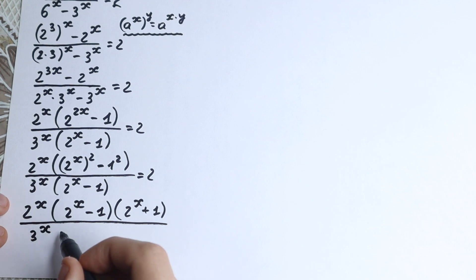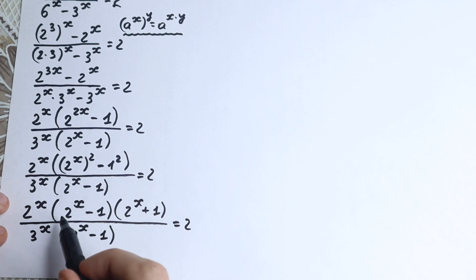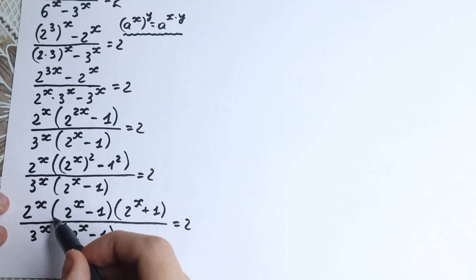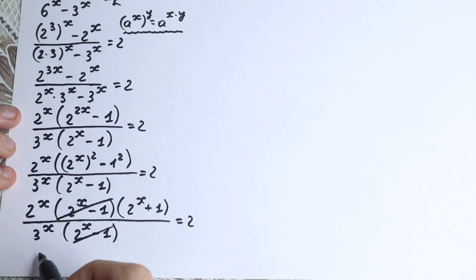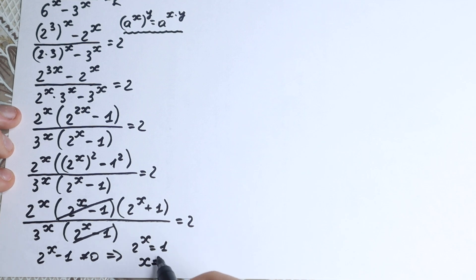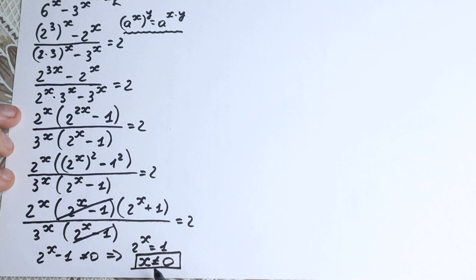We have 2 to the x minus 1 in both the numerator and denominator, so we can cancel it — but with one important condition: 2 to the x minus 1 must not equal 0, meaning 2 to the x is not equal to 1, so x is not equal to 0. We must remember this for the rest of the solution.